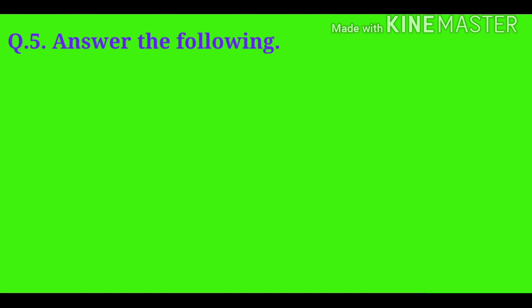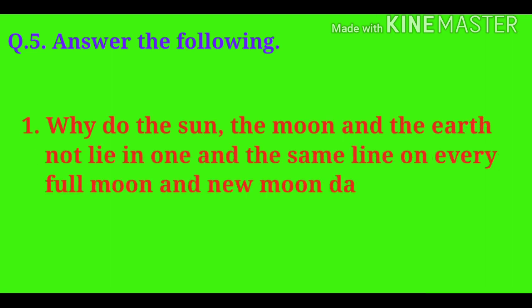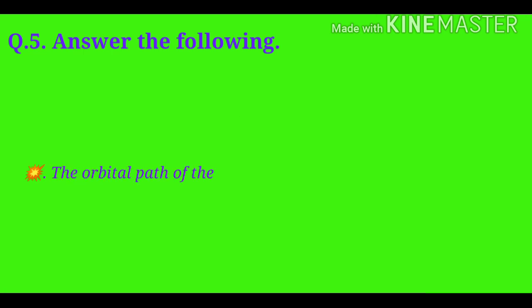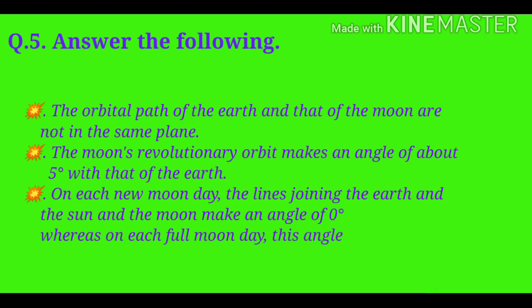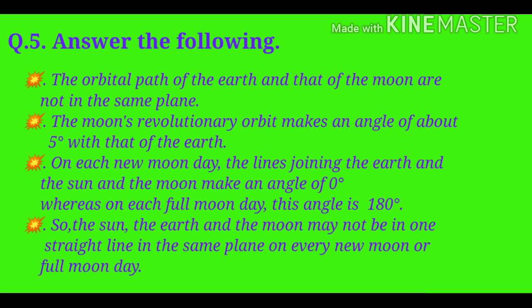Question number five: Why do the sun, the moon and the earth not lie in one and the same line on every full moon and new moon day? The orbital path of the earth and that of the moon are not in the same plane. The moon's revolutionary orbit makes an angle of about 5 degrees with that of the earth. On each new moon day, the lines joining the earth, the sun and the moon make an angle of 0 degrees, whereas on each full moon day this angle is 180 degrees. So the sun, the earth and the moon may not be in one straight line in the same plane on every new moon or full moon day.